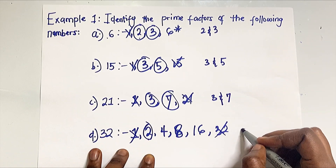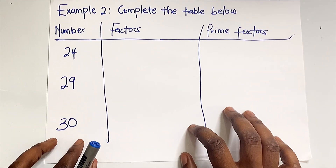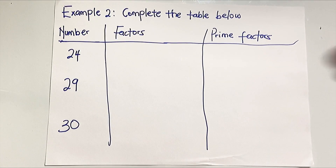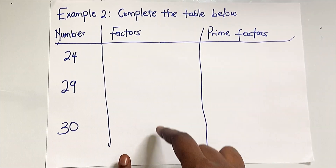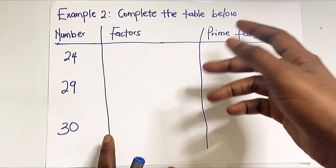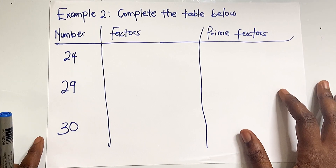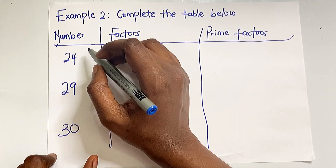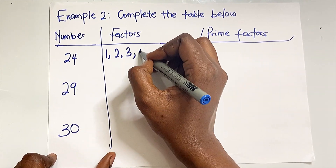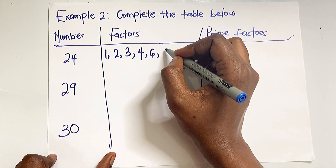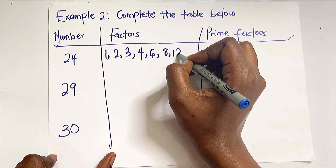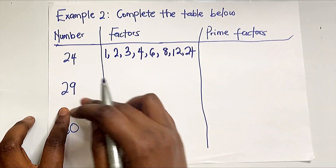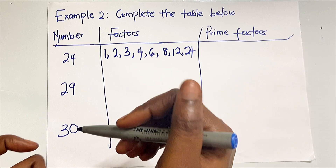Let's tackle one more example and we'll call it a day. This question says 'complete the table below.' On one side of the table we have the numbers, then we have all the possible factors of each number, and then we write out the prime factors. First, let's write out the factors of 24: 1, 2, 3, 4 — since 4 times 6 is 24 — and then 6, 8, 12, and 24 itself.